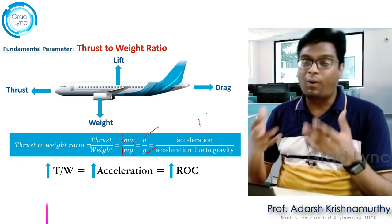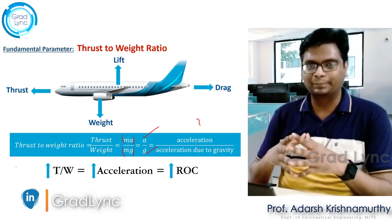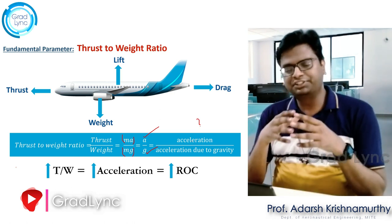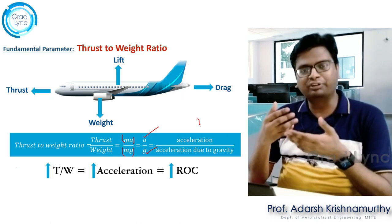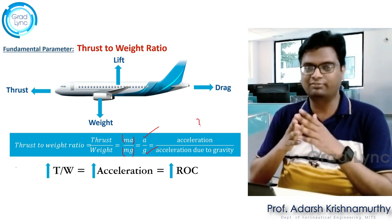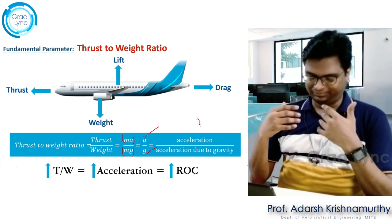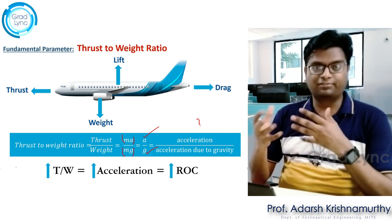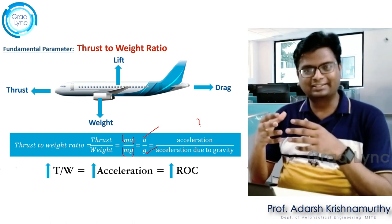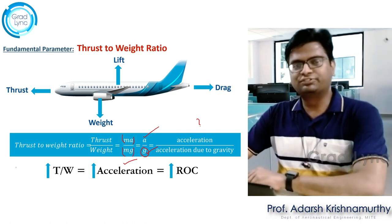Please understand what happens if the thrust-to-weight ratio is greater than 1, and when are the situations when it is less than 1. We will answer this at the end of this lecture. As the thrust-to-weight ratio increases, the aircraft's acceleration increases with respect to g, which is a constant value, and that also leads to an increment in rate of climb. In a couple of classes before, we understood the importance of rate of climb and its relation to thrust-to-weight ratio.